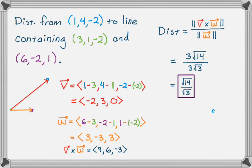And just so you're clear on what happened, here's the picture again with the actual line drawn in. And we find this height, which is the distance from the point to the line. And that is the √14 over √3.